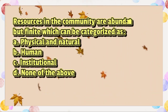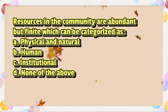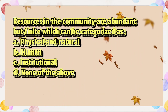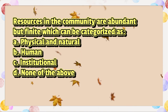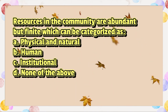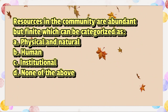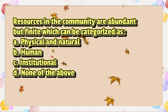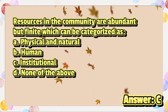Resources in the community are abundant but finite, which can be categorized as: A. Physical and natural. B. Human. C. Institutional. D. None of the above. The answer is letter C.